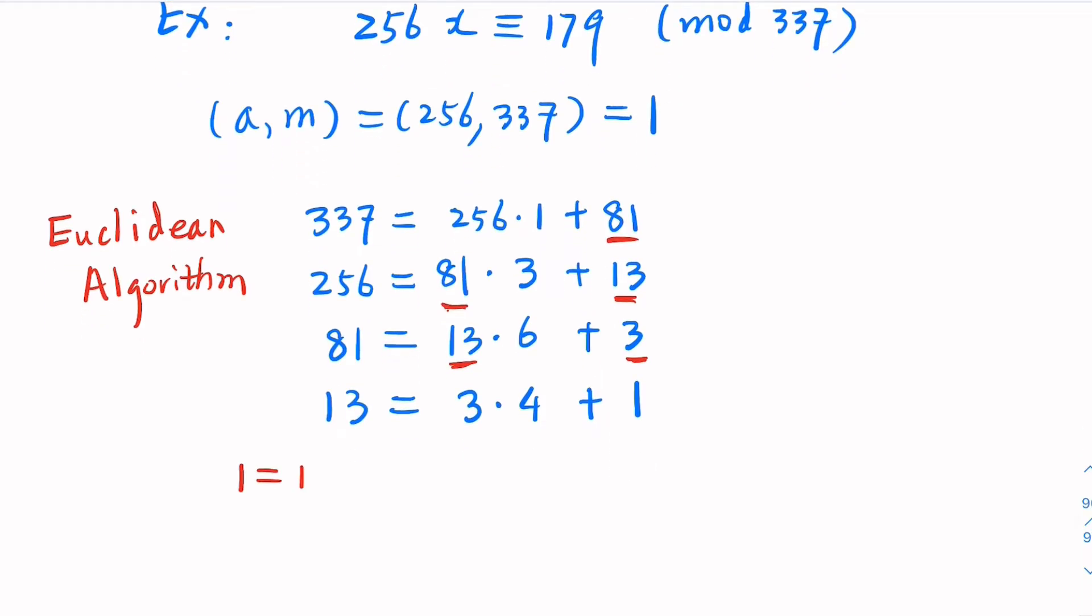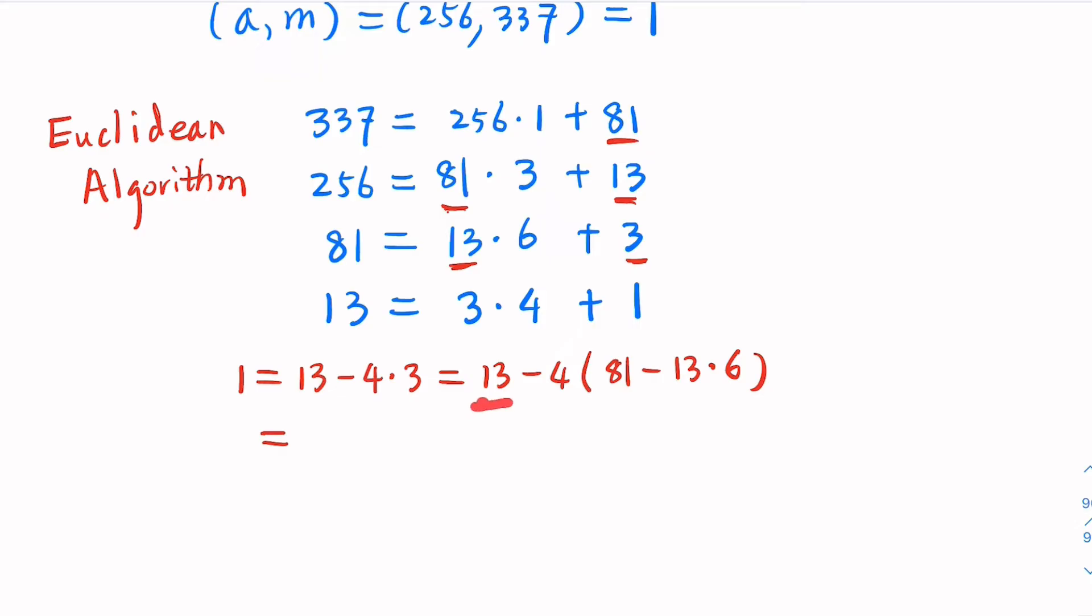So 1 would be equal 13 minus 4 times 3. What is 3 here? You know the 3 here, so 3 in terms of 81 minus this one. Let's say 13 minus 4, and the 3 here is 81 minus 13 times 6. Let's first combine with 13 here. So we have 13, and we have 4 times 6 times 13. 13 times 4 times 6, 24, plus 1 is 25. So the 25, and the minus 4 times 81.